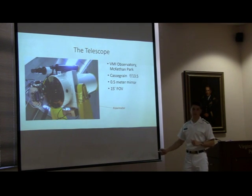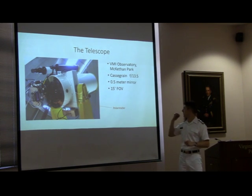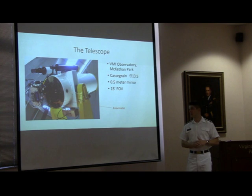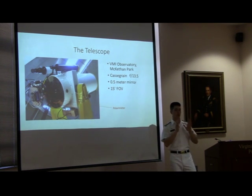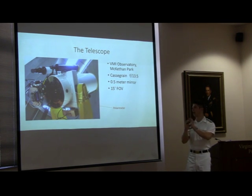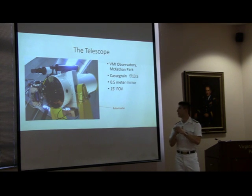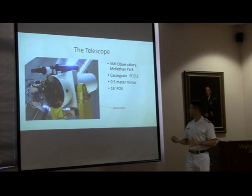Here's the telescope. It's out at the VMI Observatory at Keith and Park. It's a Cassegrain with a focal ratio — focal length to diameter — of 13.5. It has a 15 arc-minute field of view. If you look up at the sky and see the moon, that's about 30 arc-minutes, so we're looking at half of that. That's basically the range we want in order to take these pictures for stellar photometry. It's a good field of view, and the polarimeter, as you saw earlier, is mounted on the back.